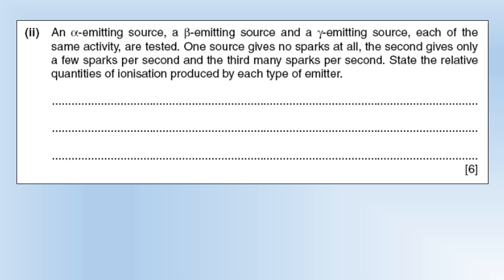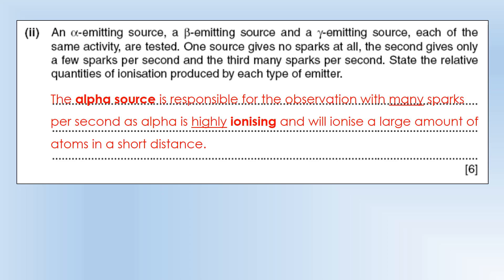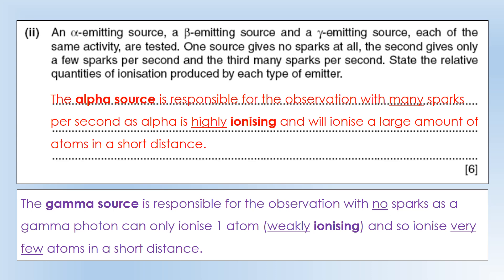The thing to realize is alpha is the most ionizing type of radiation. What that means is in a fixed distance it will cause the most ionizations. You see numbers quoted - it's considered that each alpha particle can ionize 20,000 atoms. Alpha is highly ionizing, it will liberate a large number of electrons, and that's where all your sparks are coming from. Whereas gamma will get no sparks at all. One gamma photon can only ionize one atom, so it's described as weakly ionizing because it doesn't really interact with matter that well.